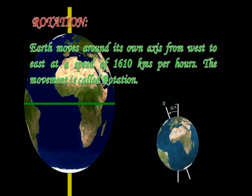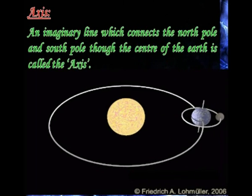Rotation: Earth moves around its own axis from west to east at a speed of 1,610 km per hour. This movement is called rotation. An imaginary line which connects the north pole and south pole through the center of the earth is called the axis.